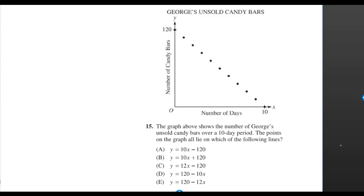The graph above shows the number of George's unsold candy bars over a 10-day period. The points on the graph all lie on which of the following lines.